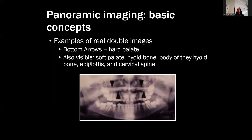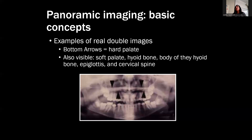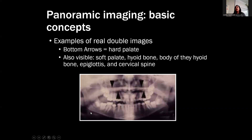Some more basic concepts of the panel. One of the first double real images you see on almost all panels is the hard palate - that's going to be a white radio-opaque line above the maxillary teeth. You're actually seeing not just a double real image but also a ghost image. The soft palate shows up on both sides of the pano even though you only have one. You can also see the epiglottis, which is usually above the hyoid bone, and the cervical spine twice.